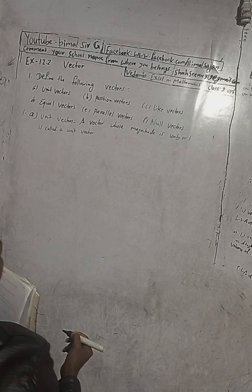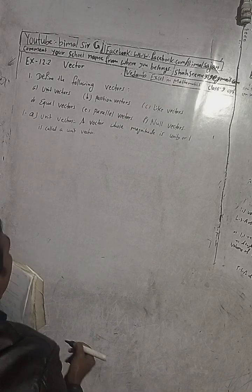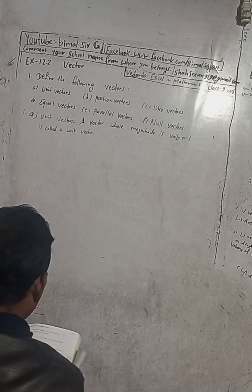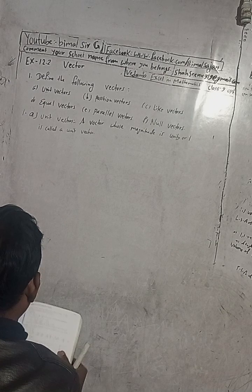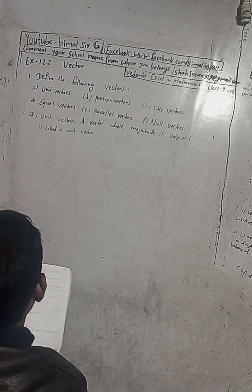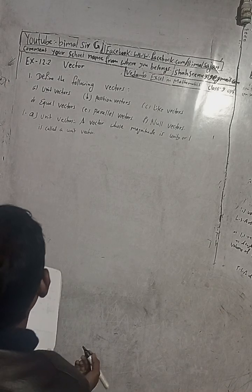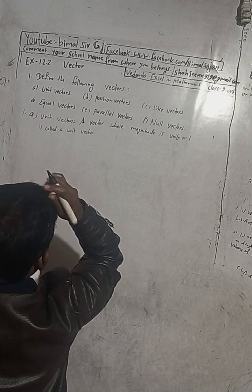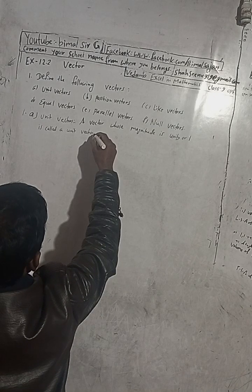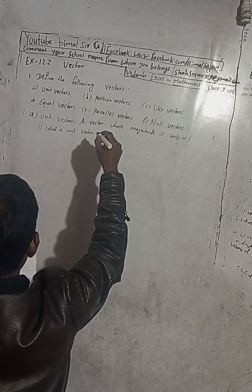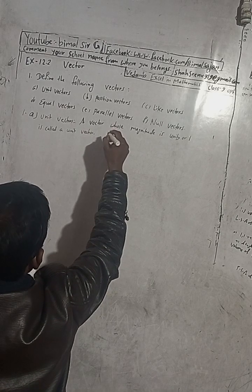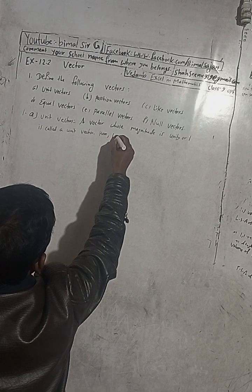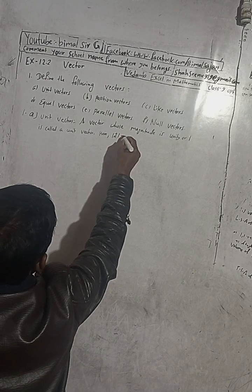Vectors whose magnitude is unity or equal to one are called unit vectors. For a unit vector, the modulus — that is, the magnitude — of the vector is equal to one.